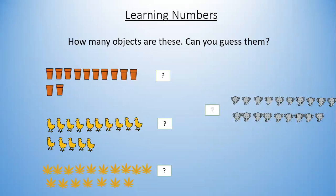Now let's check the number of flowers. 1, 2, 3, 4, 5, 6, 7, 8, 9, 10, 11, 12, 13, 14, 15, 16, 17. 17 flowers.